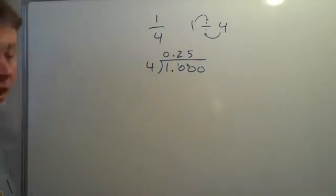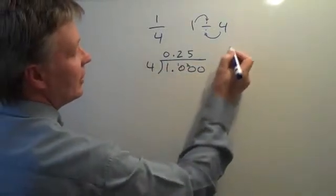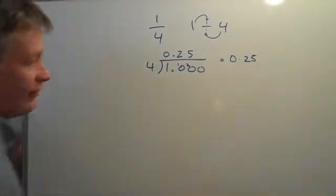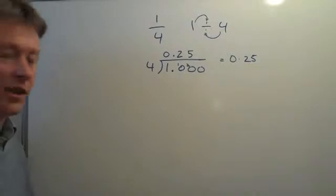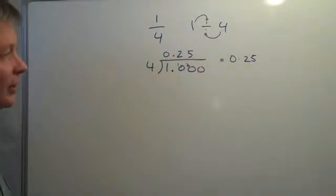So in other words, that 1 over 4 is, as a decimal, 0.25. And it is a good idea to learn some of these decimals because then you can use them in a lot of your calculations.